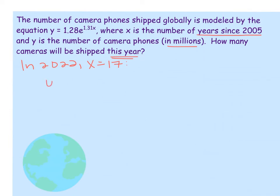Plugging that in, we'd have y equals 1.28 times base e to the 1.31 times 17 power. Again, be careful how you enter this in. Since our exponent has a product, make sure to put that in parentheses.